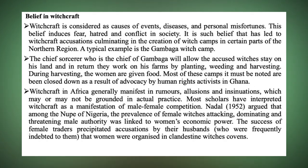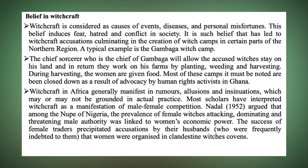There is also a generational dimension where older women are more likely to be accused as witches. In the northern part of Ghana, there is the Gambaga Witch Camp, where people accused of being witches are isolated and kept there so they cannot access their family members or negatively impact them. These women are isolated from their families, confined, and their human rights are curtailed.